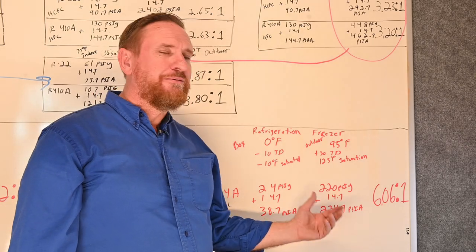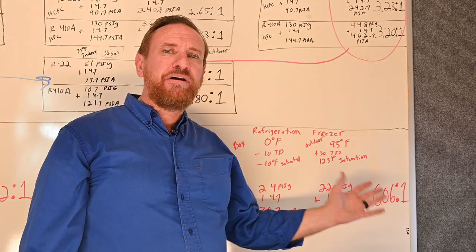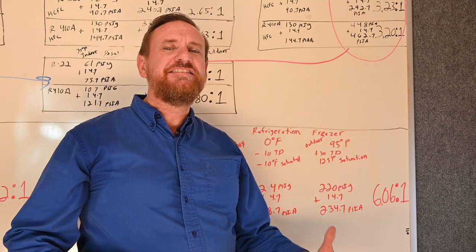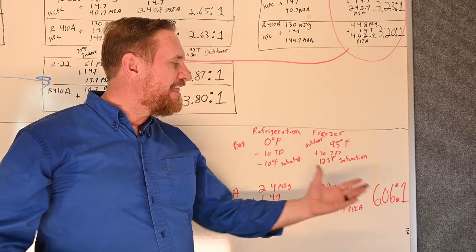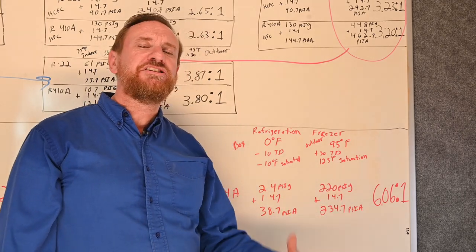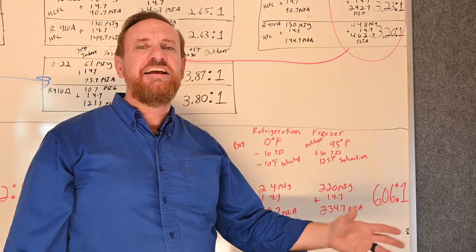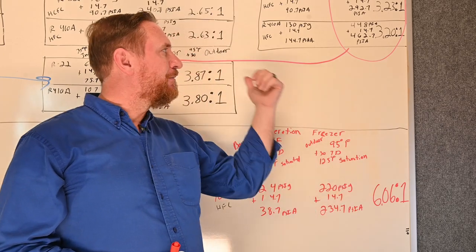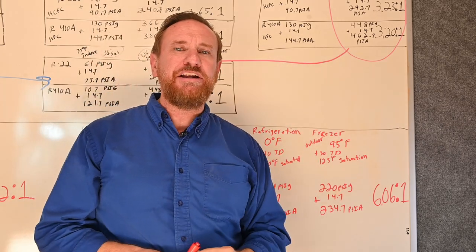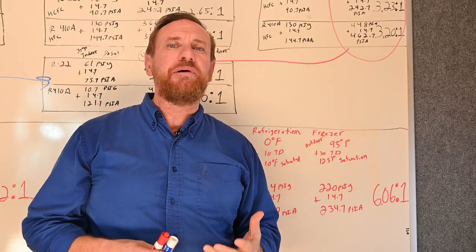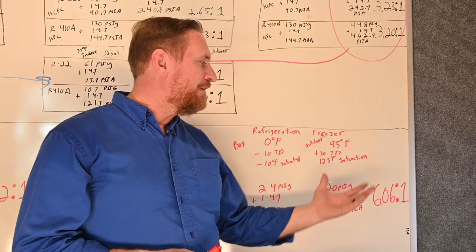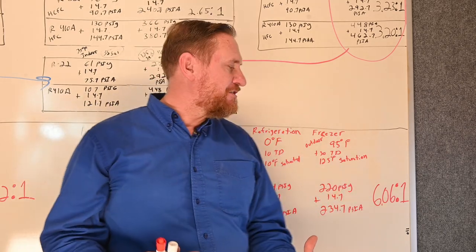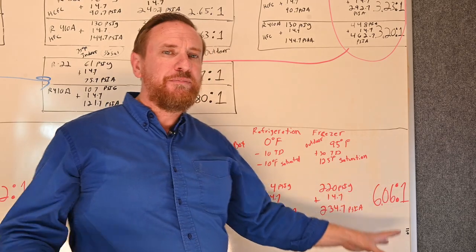Walk-in freezers will have a much higher horsepower compressor compared to the tonnage of refrigerant it's moving — it's having to do a lot more work. But that 6.06 to 1 compression ratio is what these systems are designed for. They're designed for the oil return and that bigger pressure difference between the suction side and the high side. Where a typical residential system wouldn't be able to handle that — the compressor would literally burn up and die.